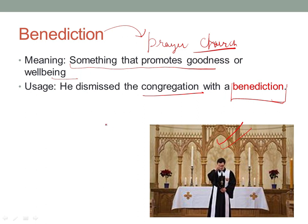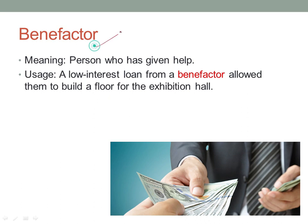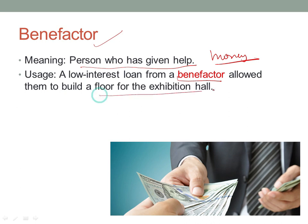The next word is 'benefactor'. A benefactor is a person who has given help in terms of money, goods, or other support — but definitely with a monetary connotation. For example: 'A low-interest loan from a benefactor allowed them to build a floor for the exhibition hall.' This was it for this video — the next video will cover high-frequency words from the alphabet C. Thank you.